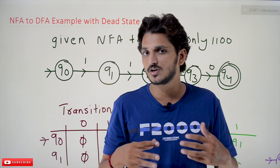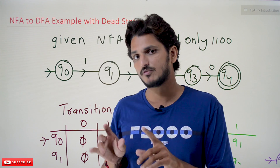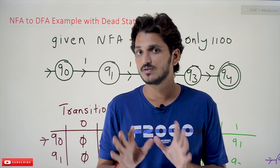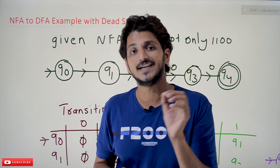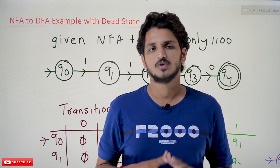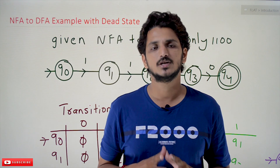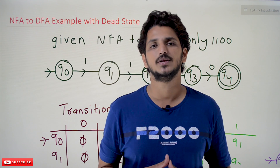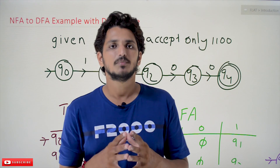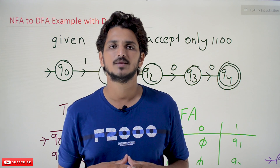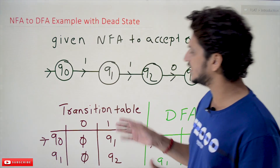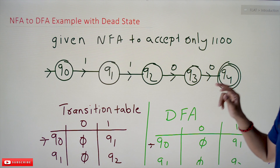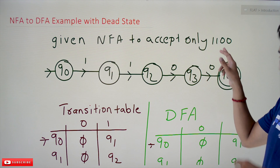We are not concentrating much on the concept of how to convert NFA to DFA here — you'll get an intuition about the dead state example. Please follow our playlist from the beginning so that you will have a better understanding of the complete theory of computation. The link for the playlist is provided in the description below. Coming to today's class, let's take this example: given NFA to accept only double-one double-zero.